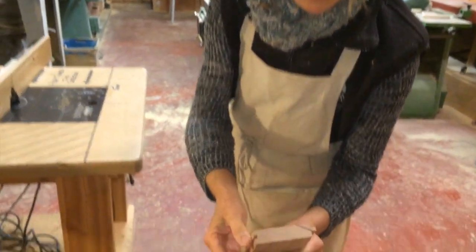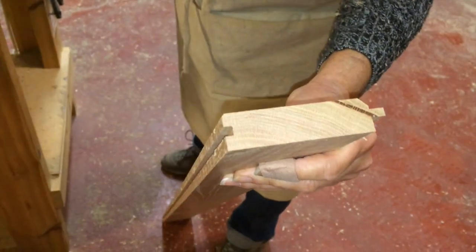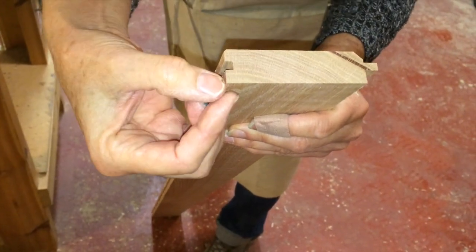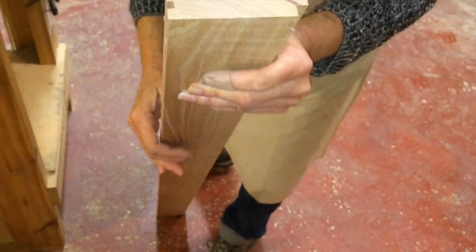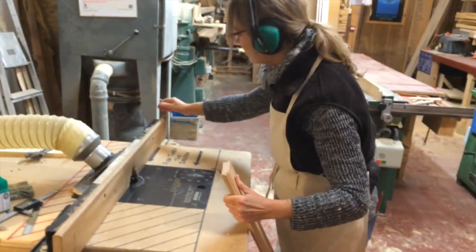You can see there's already the chamfer and a little bit of that tongue starting. So now we're just going to complete it, but we're not going to go any deeper than this. Otherwise we'll lose our full face. So now we're going to do that second pass by lining it up with this.